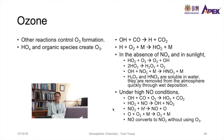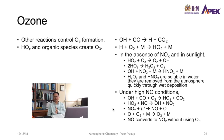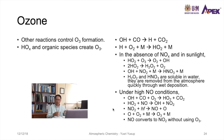Under very high NO conditions, OH reacts with CO and O₂ to form HO₂ and CO₂. This HO₂ plus NO reacts to form NO₂ and OH, allowing the oxygen atom from NO₂ photolysis to react with O₂ and M to form ozone. This means NO converts to NO₂ without consuming O₃ — hence ozone accumulates. This is a second pathway for ozone accumulation, occurring specifically under high NO conditions.